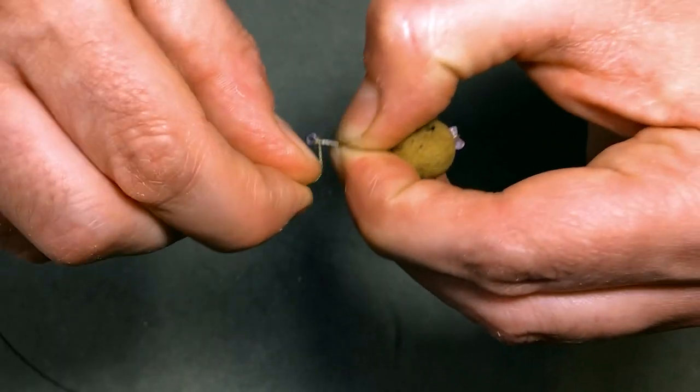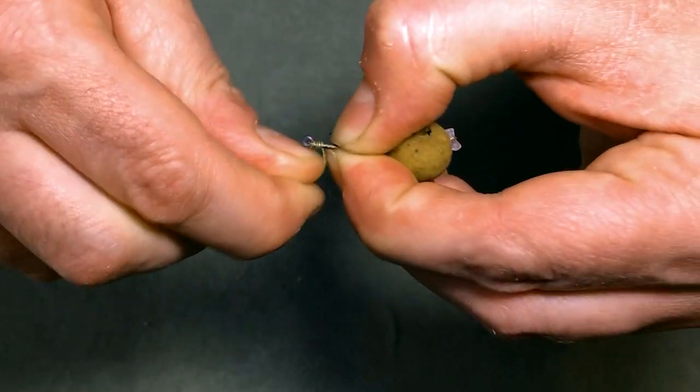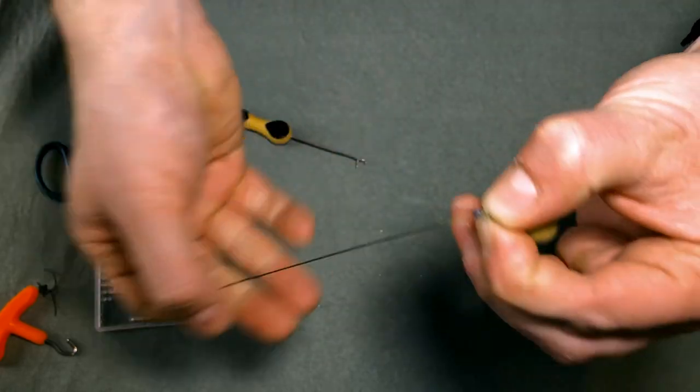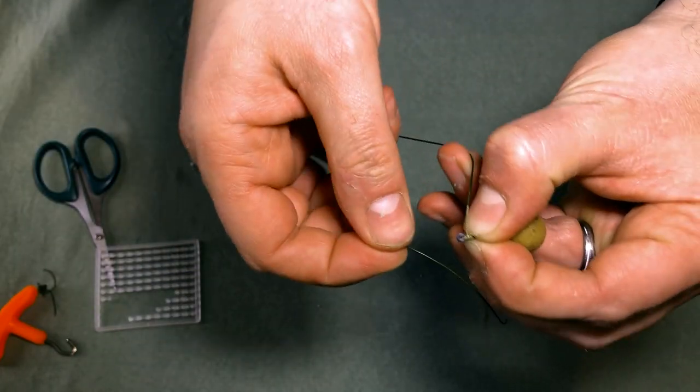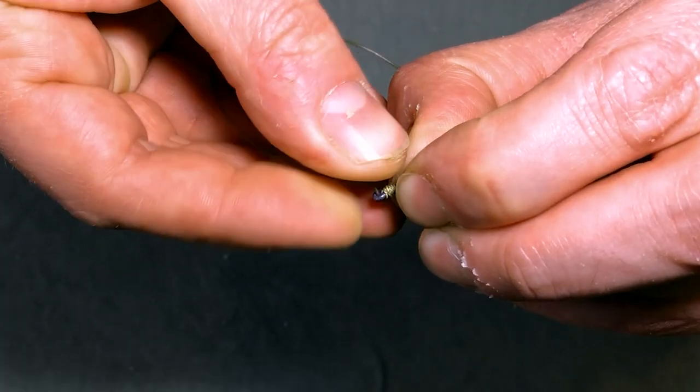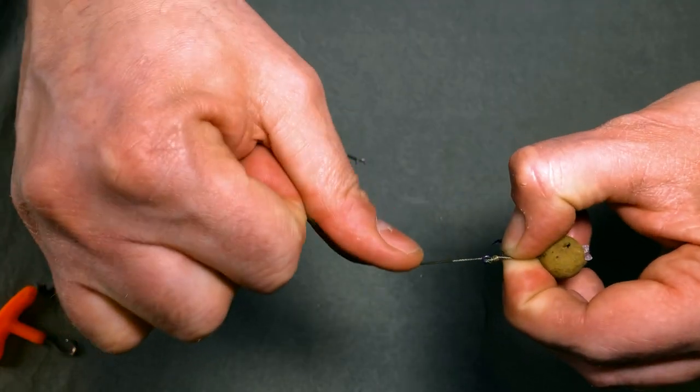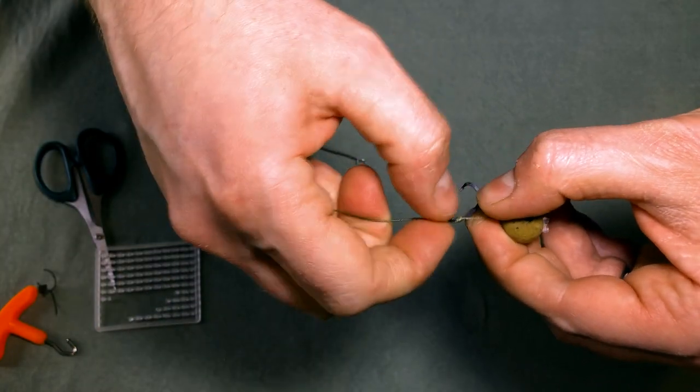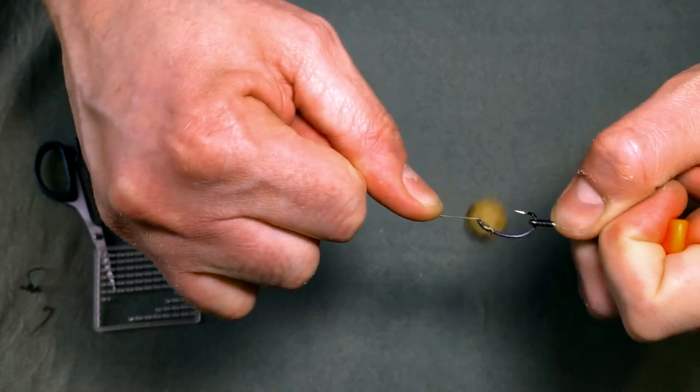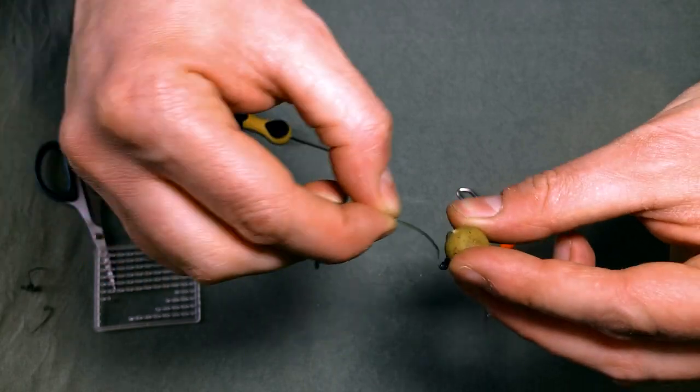Next part is to tie your knotless knot. Five turns, six turns is more than enough. And when you're ready to thread it back through, back through the eye of the hook. And then pull your hook with a hook puller. Just tighten that knot down. As you can see I've left about half an inch of uncoated braid there just for a bit more flexibility.